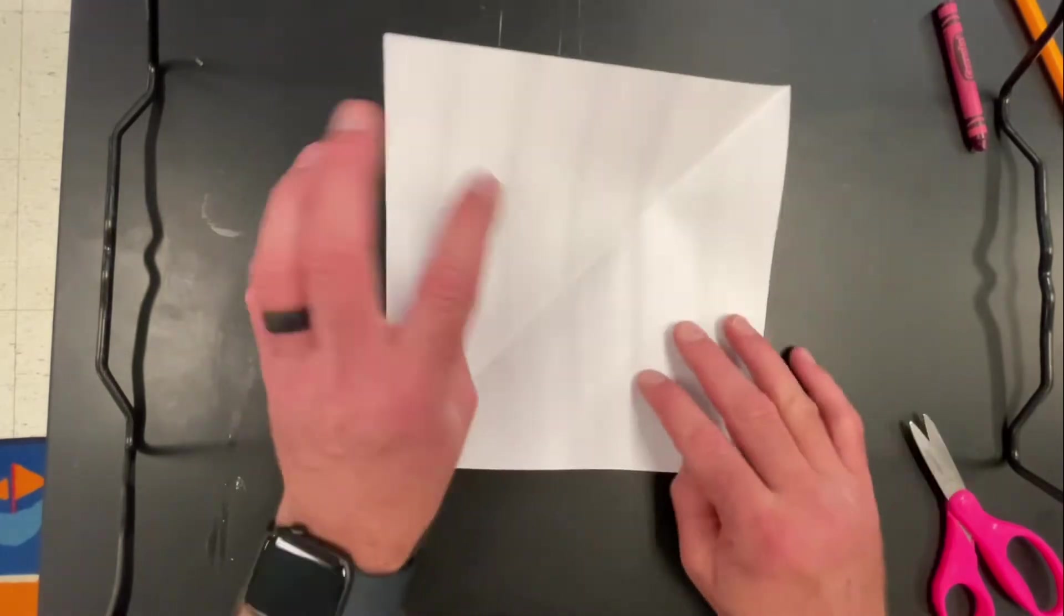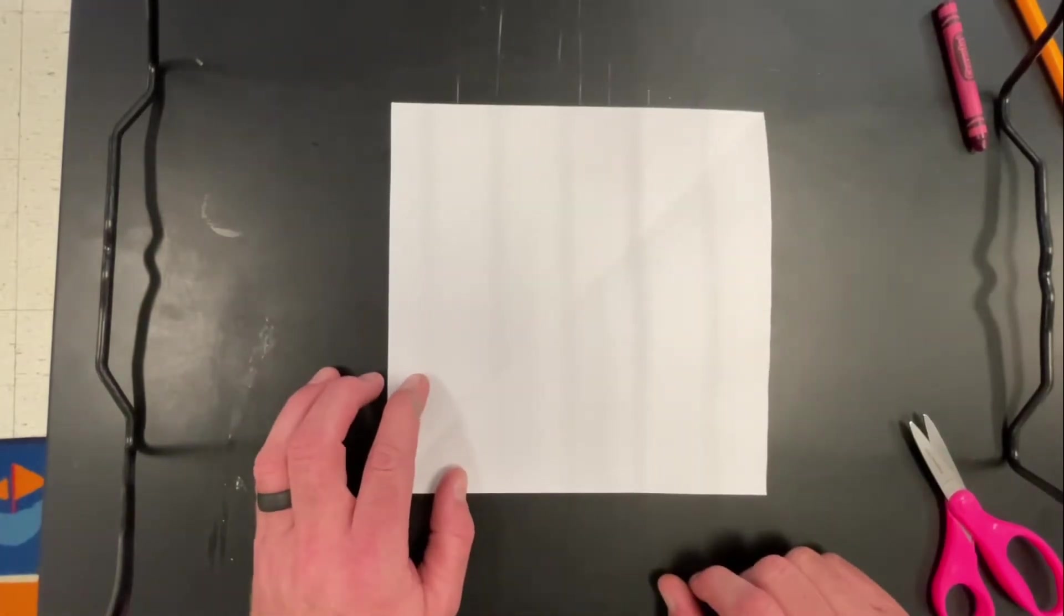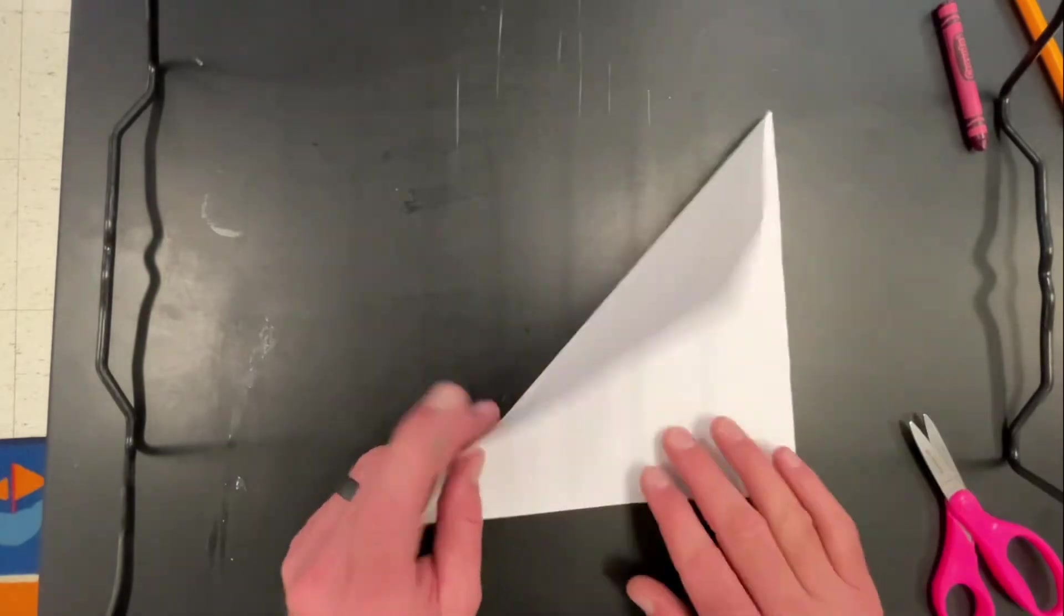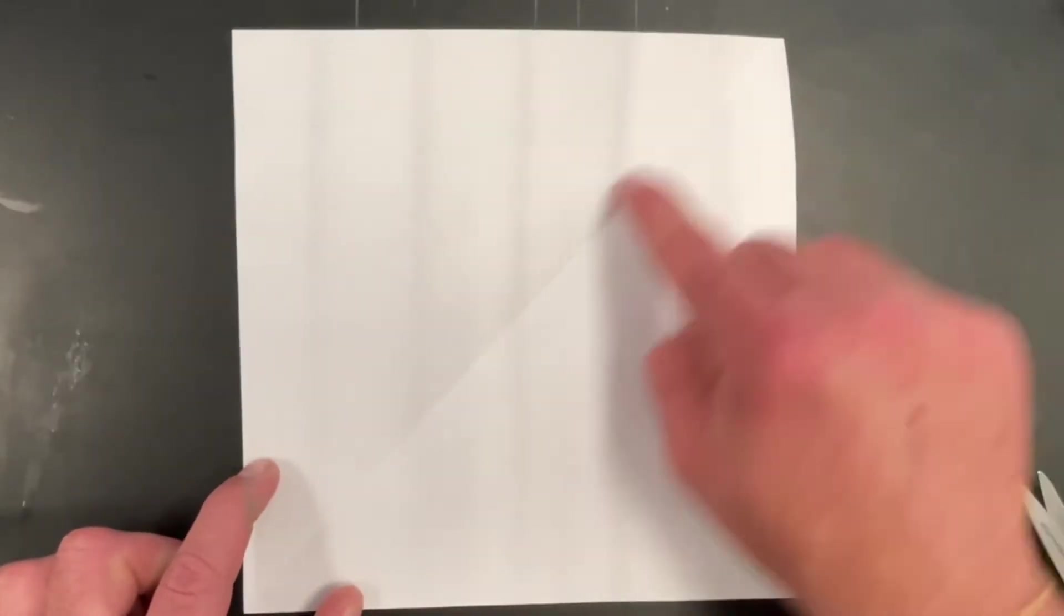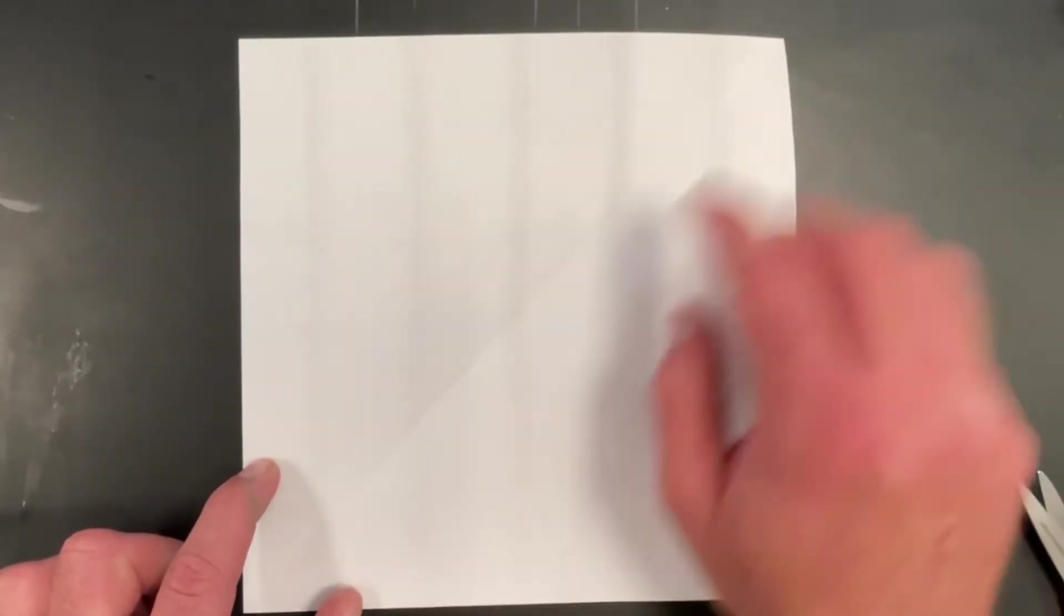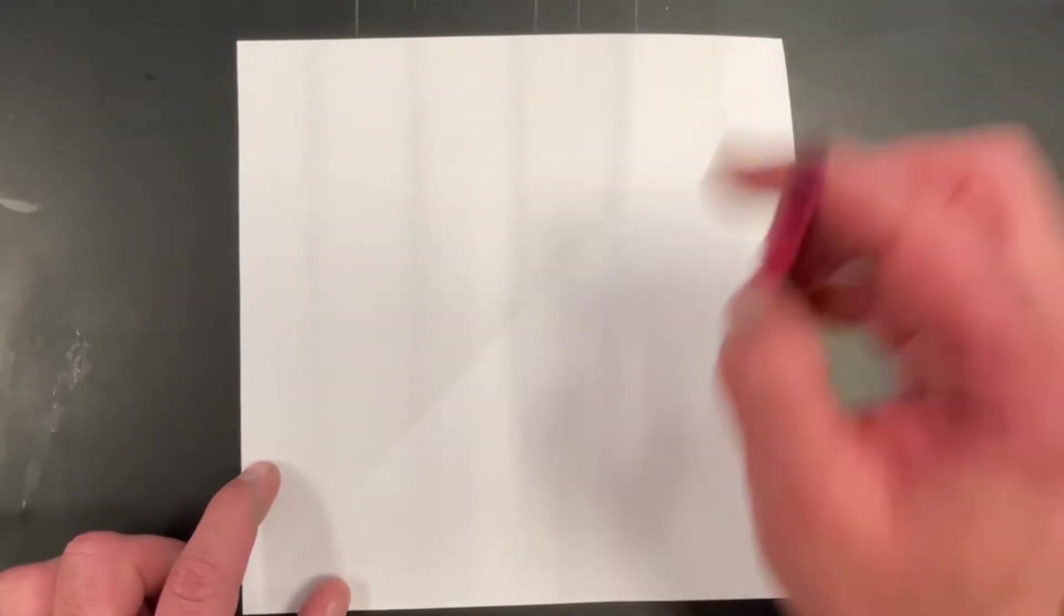And then when you open this back up, what shape do you have? We're actually gonna be using these two triangles. So this line right here you need to darken it with a crayon.